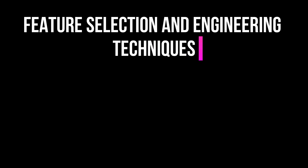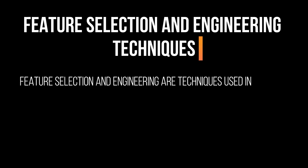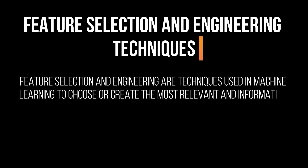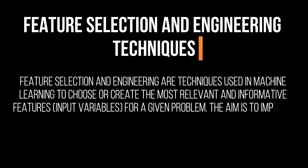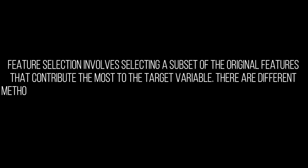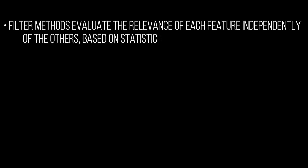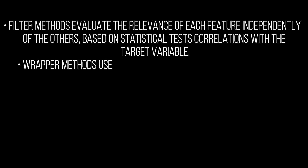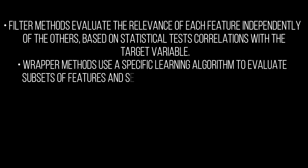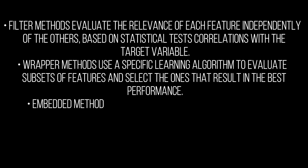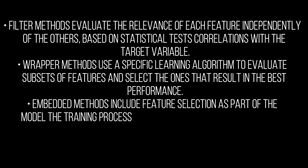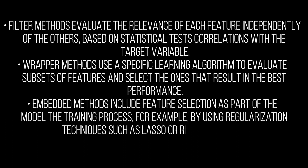Feature Selection and Engineering are techniques used in machine learning to choose or create the most relevant and informative features (input variables) for a given problem. The aim is to improve the model's performance and reduce overfitting. Feature Selection involves selecting a subset of the original features that contribute the most to the target variable. There are different methods for feature selection: filter methods evaluate the relevance of each feature independently based on statistical tests or correlations with the target variable; wrapper methods use a specific learning algorithm to evaluate subsets of features and select the ones that result in the best performance; embedded methods include feature selection as part of the model training process, for example by using regularization techniques such as lasso or ridge regression.